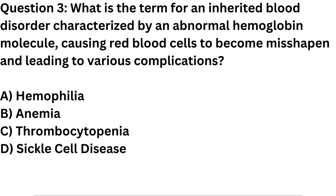Question 3. What is the term for an inherited blood disorder characterized by an abnormal hemoglobin molecule, causing red blood cells to become misshapen and leading to various complications? A. Hemophilia. B. Anemia. C. Thrombocytopenia. D. Sickle cell disease.